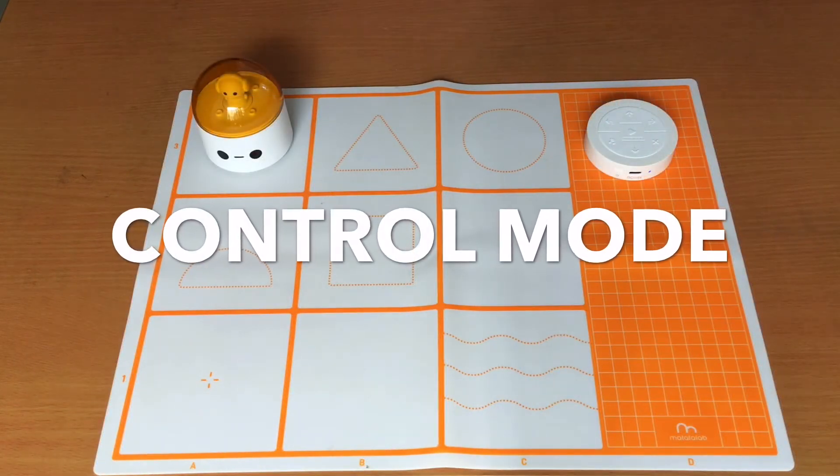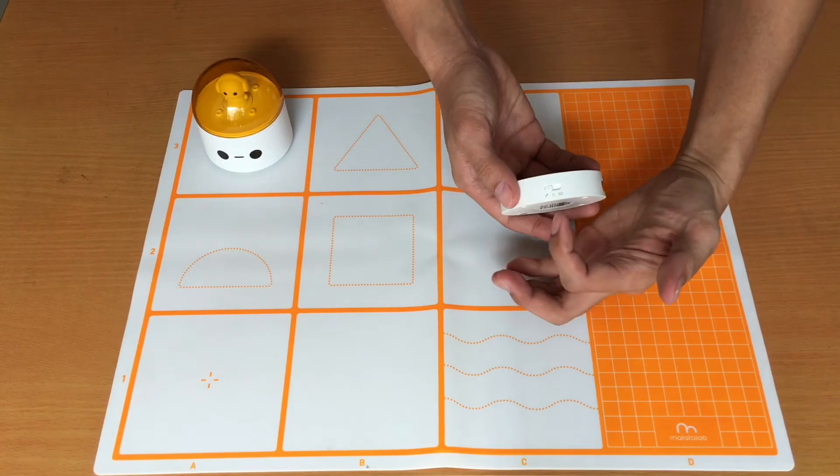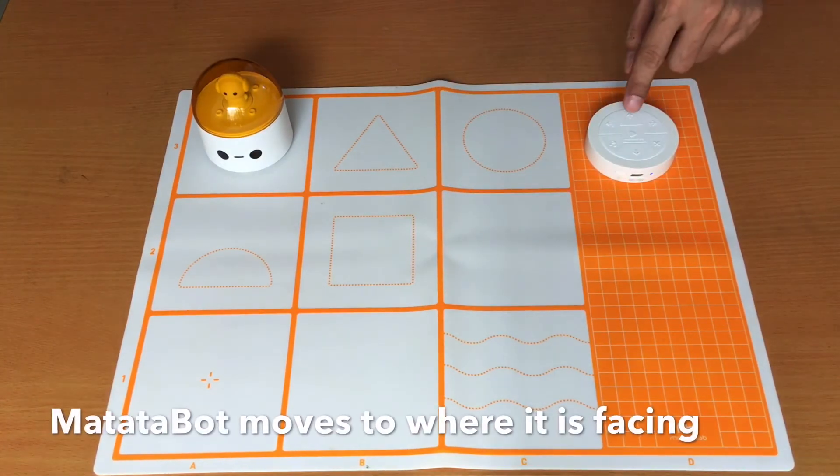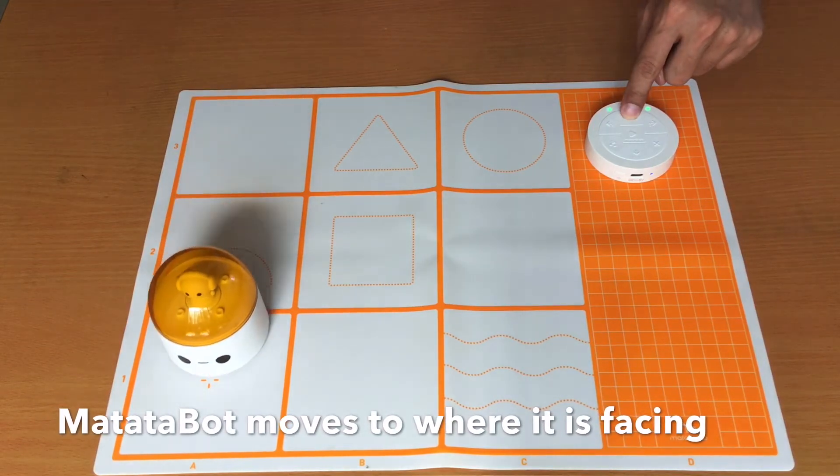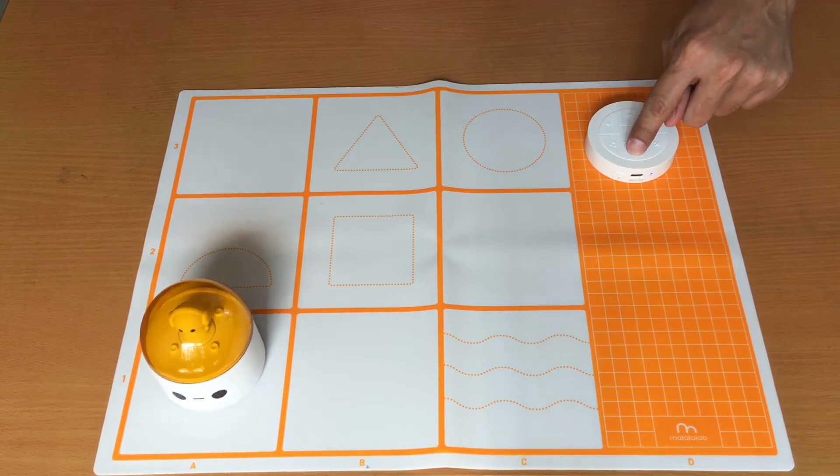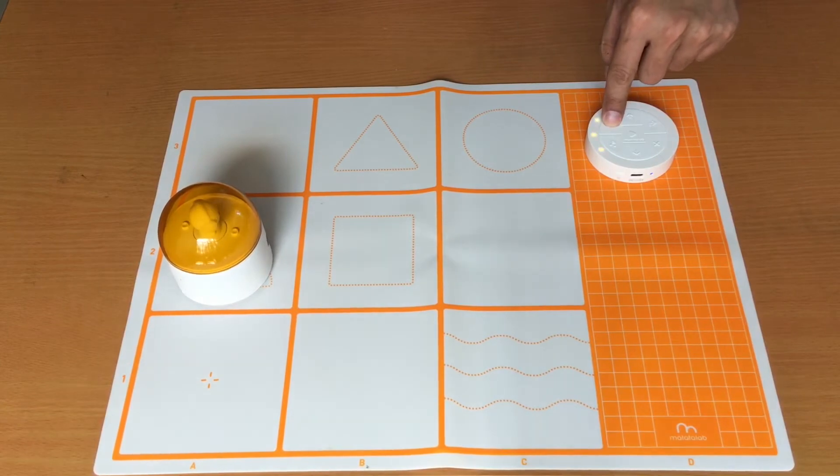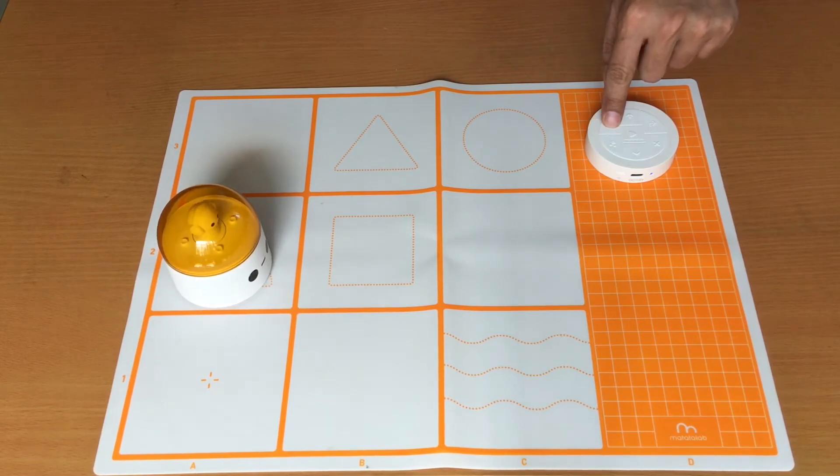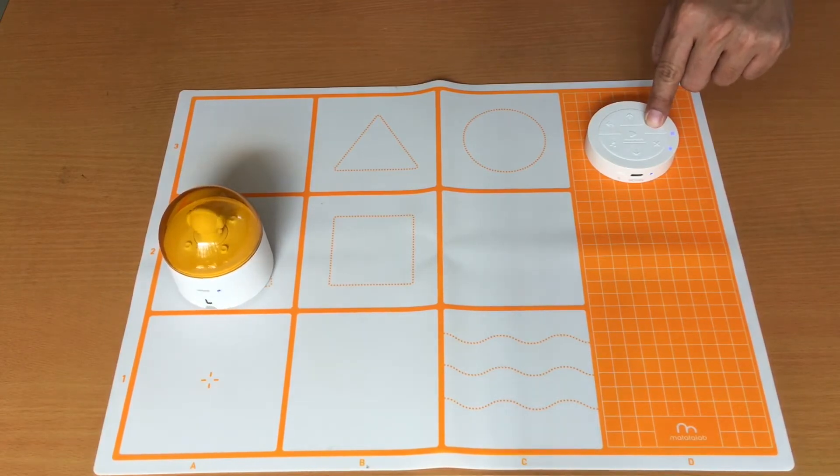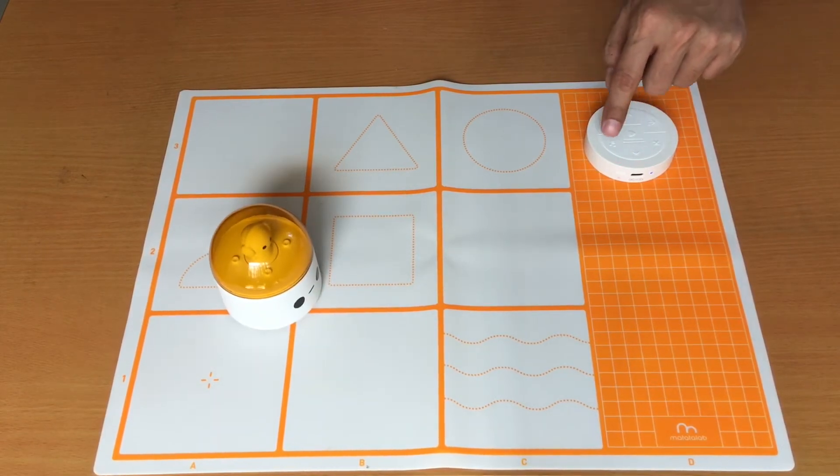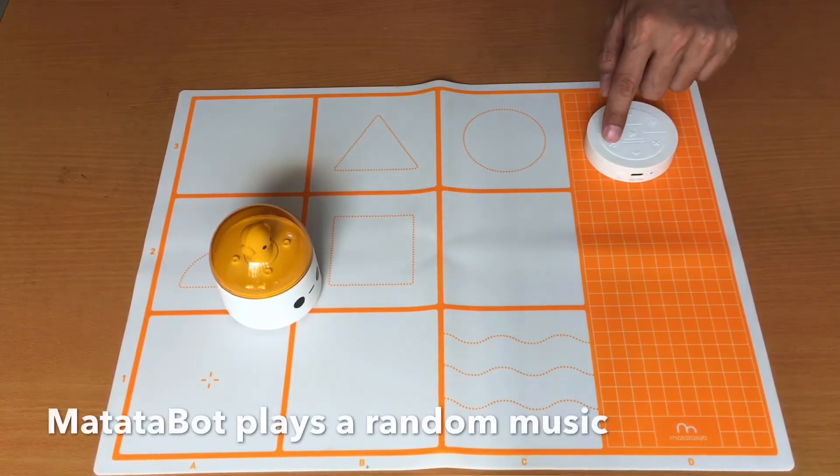Let's begin with the control mode. First, make sure that the switch is on the control mode. Then press the forward button to move the Matatalabot forward. Backwards. Turn to the left. And turn to the right. Forward again. Backwards. And when you press the music button, it will play around the music.